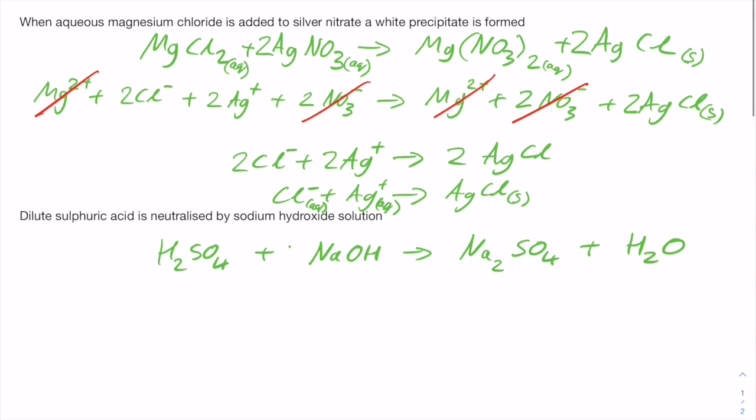And we're going to produce 2 of the waters on this side. We'll then split them apart into the ions, so we'll have 2H+ plus SO4 2- plus 2Na+ plus 2OH-.